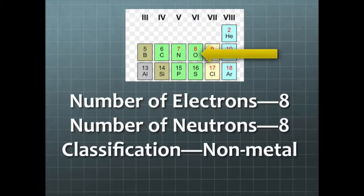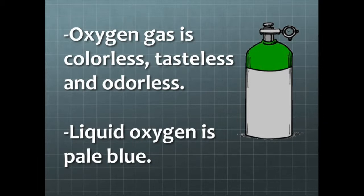Oxygen has 8 electrons and 8 neutrons and it is a non-metal. Oxygen gas is colorless, tasteless and odorless, while liquid oxygen is pale blue.